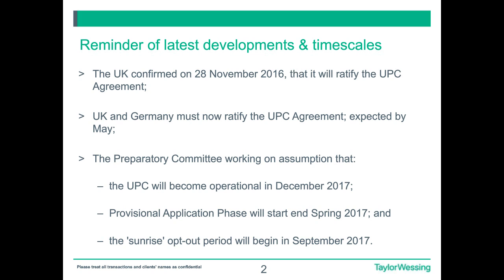The two protocols — the Protocol on Provisional Application and the Protocol on Privileges and Immunities — need to be signed. Assuming these are in place by May, the Preparatory Committee can keep to its proposed timetable in which a provisional period for the UPC, when judges will be appointed, will start in May, followed by a full opening on the 1st of December. According to this timetable, there would also be a sunrise period starting in September in which opt-outs of European patents — classical European patents — can start to be lodged. We will of course be continuing to monitor the timetable closely and update in future webinars.